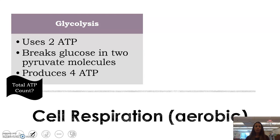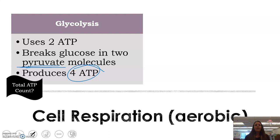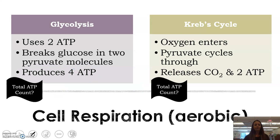There are three major steps of cell respiration, and we'll track our total ATP count throughout since the whole point is to make ATP. First, glycolysis uses two ATP just to get started. It breaks glucose into two molecules of pyruvate and produces four ATPs, but it's only a net of two because we had to use two. Those two have to go back to start the process again for the next glucose molecule, so it takes multiple rounds of glycolysis to get energy from your food.